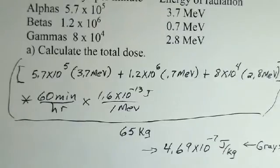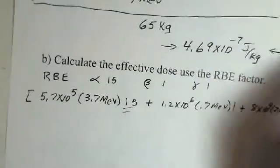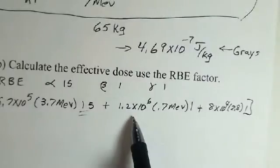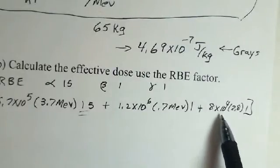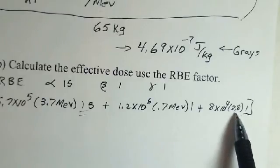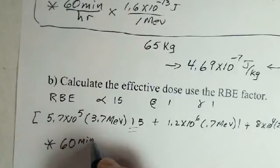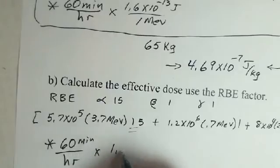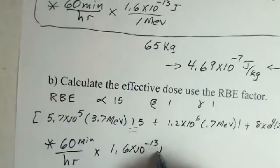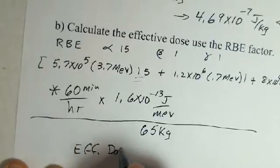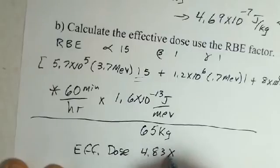So in the new calculation, for the alpha: decays per minute times the energy per alpha times the RBE factor of 15. For the beta: decays per minute, the energy, and RBE of 1. For the gamma: decays per minute, 2.8 MeV, and RBE of 1. We again apply the 60 minutes per hour conversion, then 1.6×10⁻¹³ joules per MeV, and divide by 65 kilograms. The effective dose comes out to 4.83×10⁻⁶ sieverts.